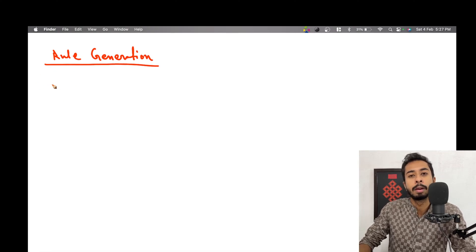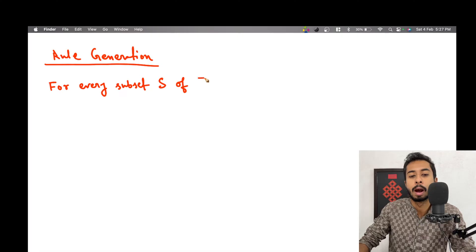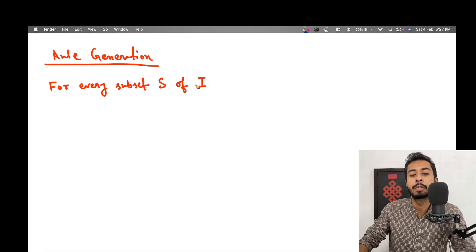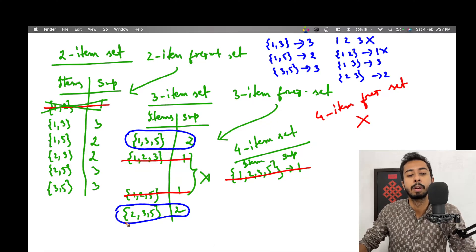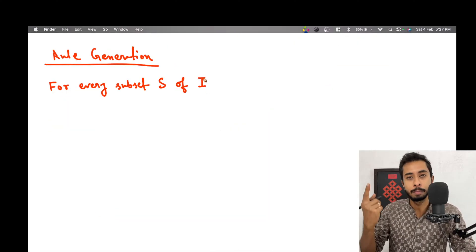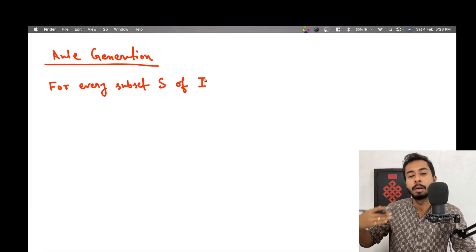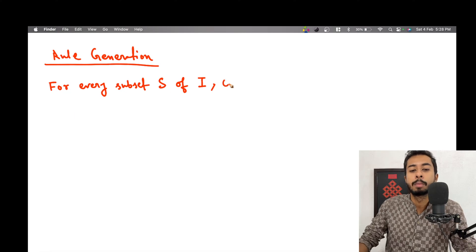So first you find out the set of frequent items. Next, for every subset S of I — where I is the frequent item set found using the Apriori algorithm — we need to output some rules. For example, {1,3,5} and {2,3,5} are frequent item sets, so I will be {1,3,5} and then {2,3,5}.